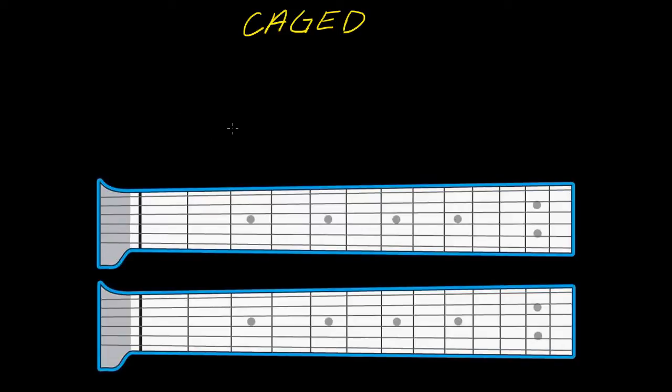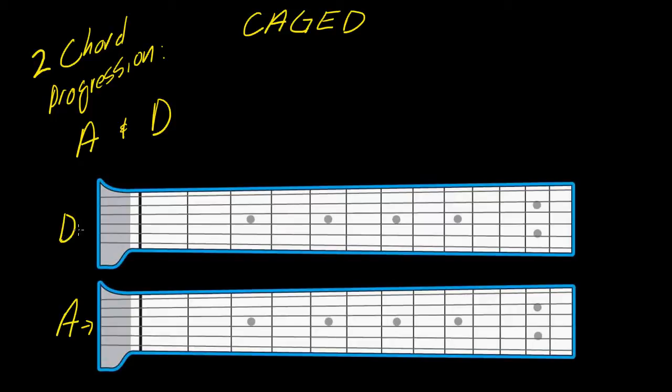So what I'm going to do is give you an example of how the CAGED system works within musical context through the applications of it. I'm going to write down a two chord progression between A and D, just the chords A and D. And I'm going to show you here on this first one, this will be the A chord. This here will be the D chord.